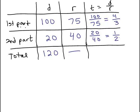We would have to add 4 thirds plus 1 half. So let's do that. The total time is 4 thirds plus 1 half so we need a common denominator, we can multiply the first fraction by 2 over 2.